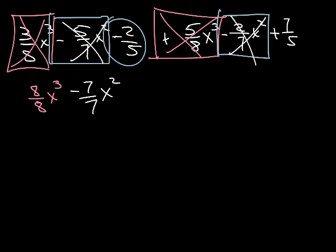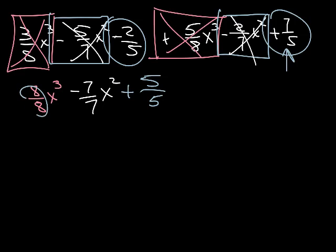And then, finally, I have negative 2/5 and a positive 7/5. So, the signs are different. We take the difference between the two. Put the sign of the biggest one, which in this case is positive from right here on your answer. And there's no variable, so it just stays that way. 8/8 is 1.